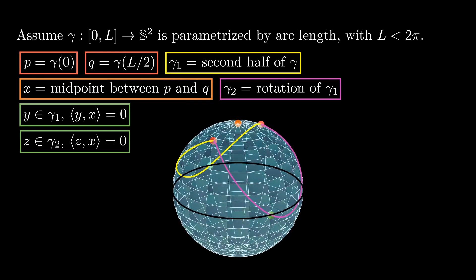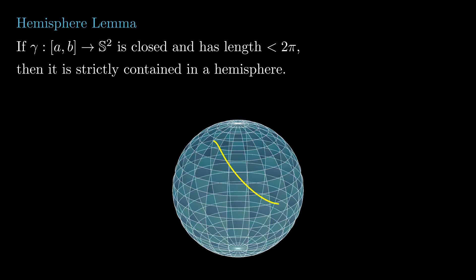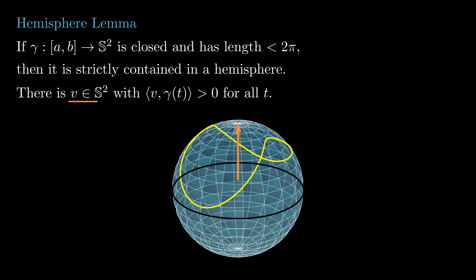This shows that gamma 1 is strictly contained in the hemisphere centered at x. An identical argument shows that gamma 0 is contained in such hemisphere as well. One way we can reinterpret this result is saying that if a spherical curve has length strictly less than 2π, then there is a vector v whose inner product with the curve is strictly positive for all time.